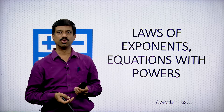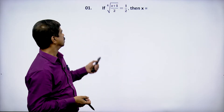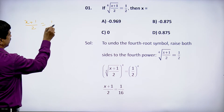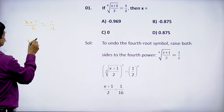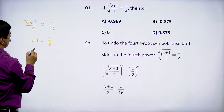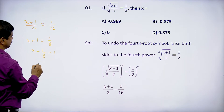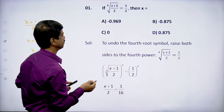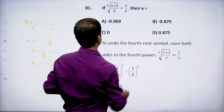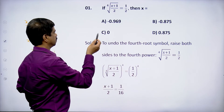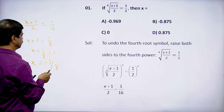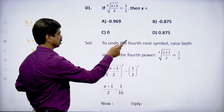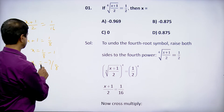So let us move ahead. The equation is x + 1/2 = 1/16, so x + 1 = 1/8, so x = 1/8 - 1 = -7/8. This is approximately -0.875, so option B satisfies.